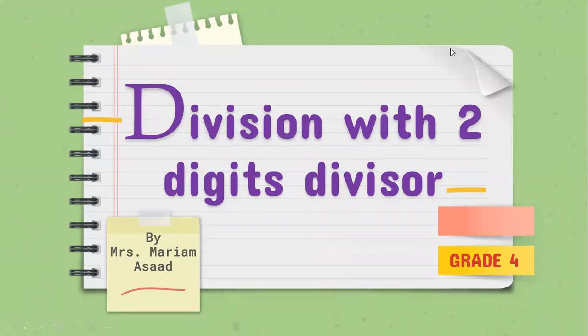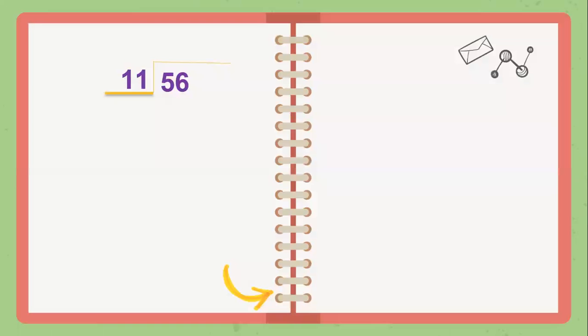Good morning students! We already know how to divide with one digit divisor, but today we are going to learn how to divide with two digits divisor. We will start by a simple example. 56 divided by 11. 56 is the dividend, 11 is the divisor. 11 has two digits, so it's a two digits divisor.